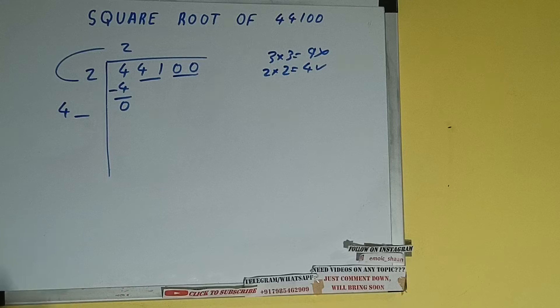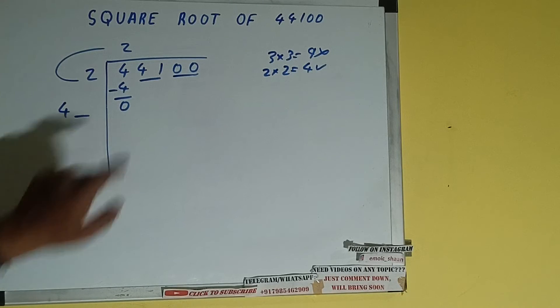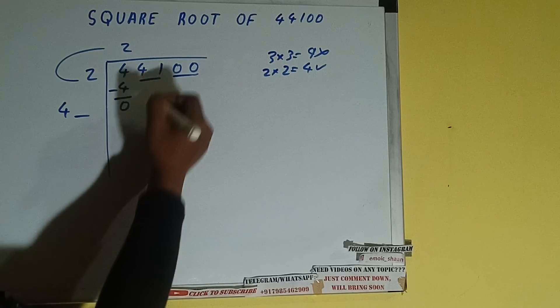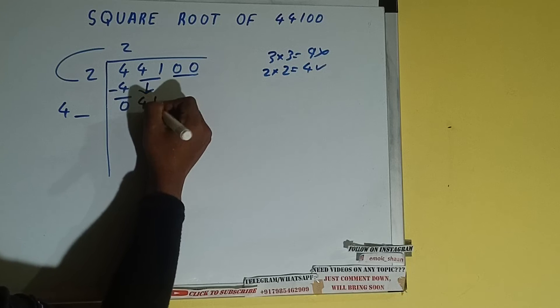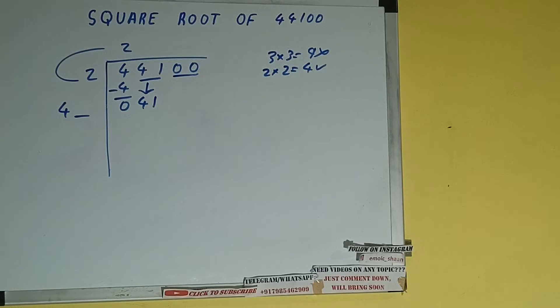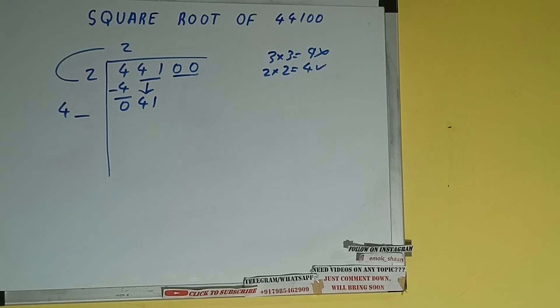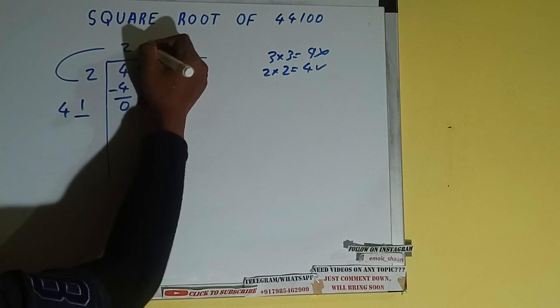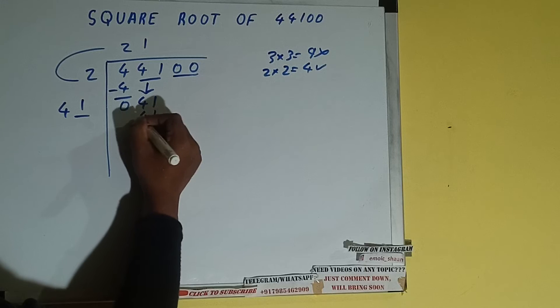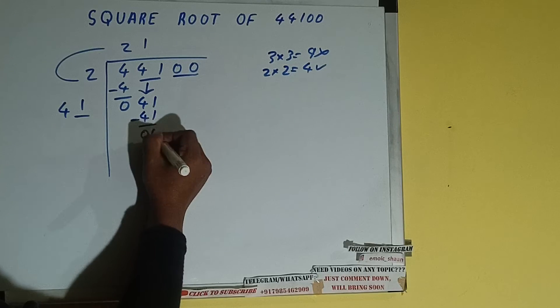Write it here and keep a digit extra, and this number we need to make it big. So bring the next pair down and it will be 41. Now whatever number we write here we need to write here also. So if we write 1 here and 1 here, it will be 41, subtract 41, 0 will be left.